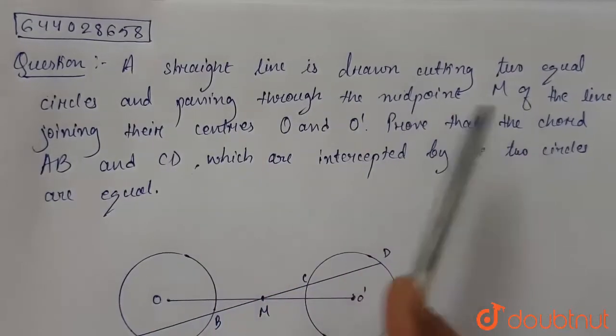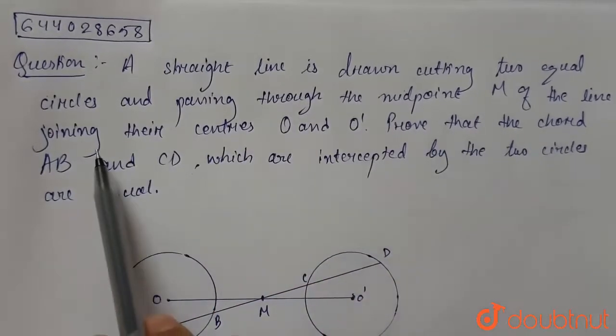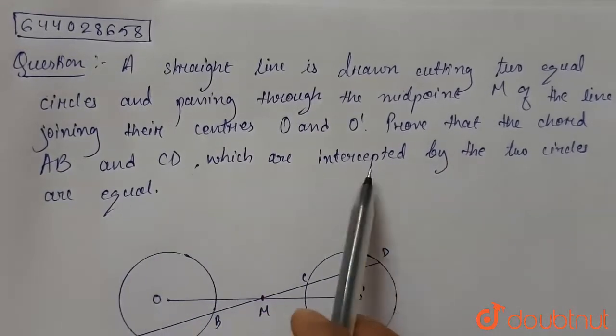...is a straight line is drawn cutting two equal circles and passing through the midpoint M of the line joining their circles O and O dash. Prove that the chords AB and CD which are intercepted by the two circles are equal.